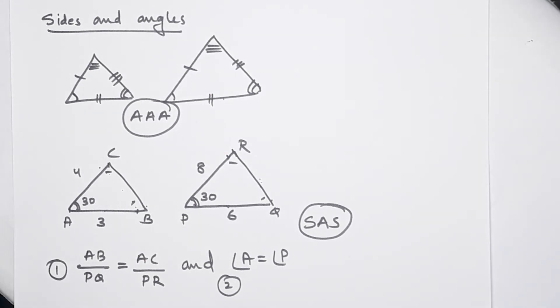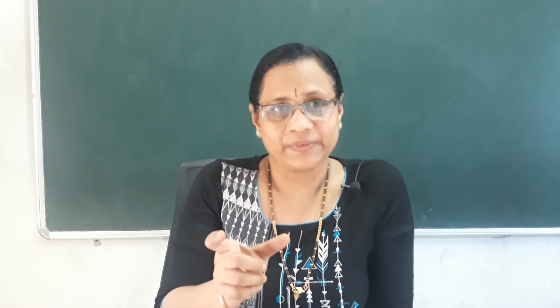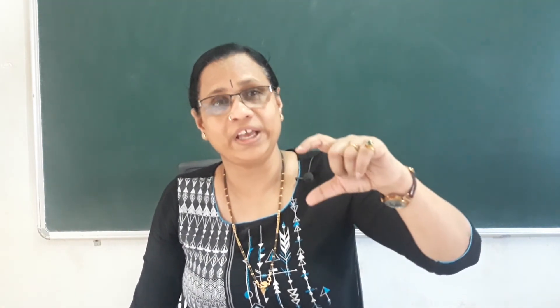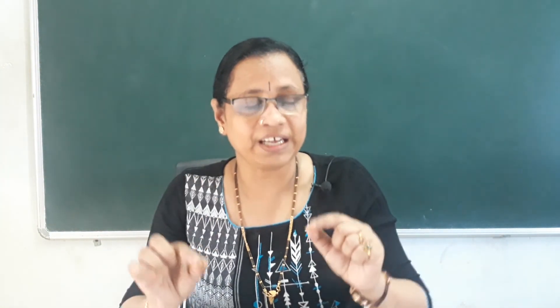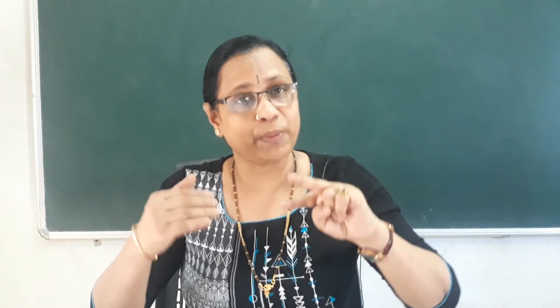We will do these problems in the next class. If the sides of two triangles are scaled by the same factor, then their angles are the same. If the angle included between two sides is the same — Side, Angle, Side — then the two triangles are similar. That means one side is included in the same angle, forming SAS similarity.